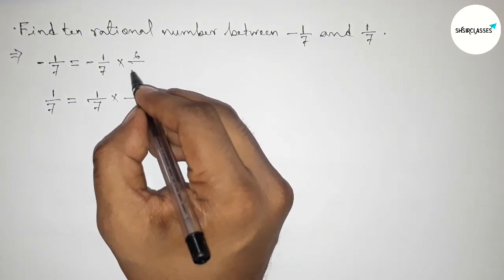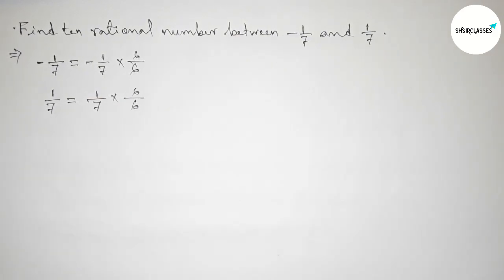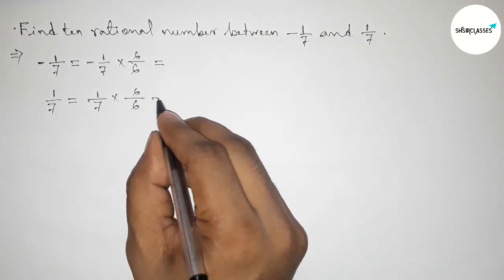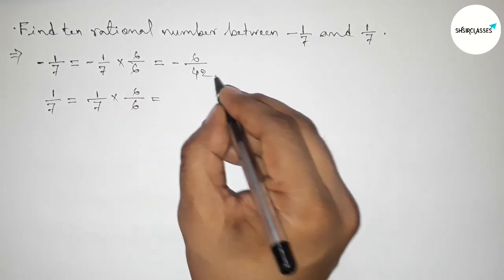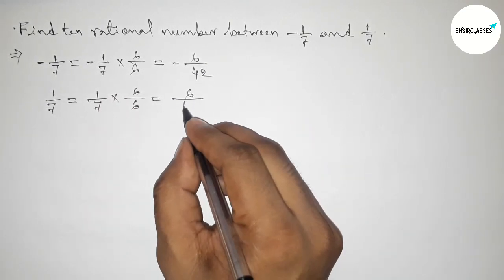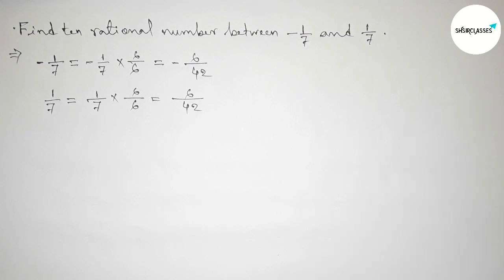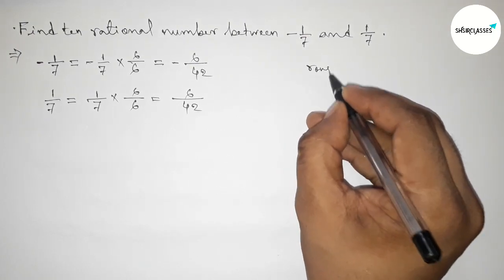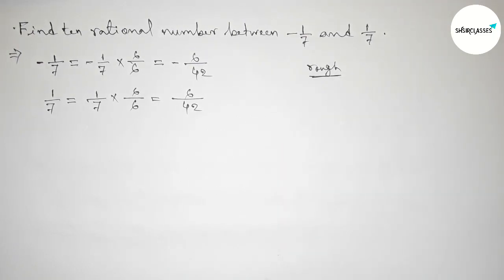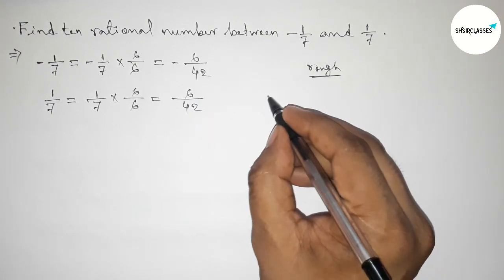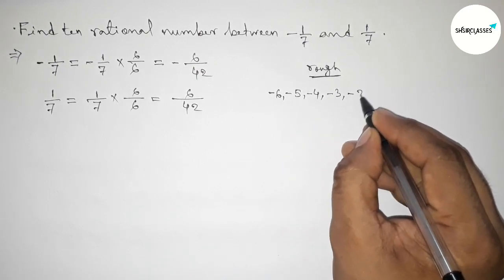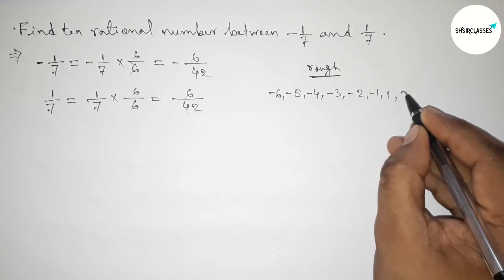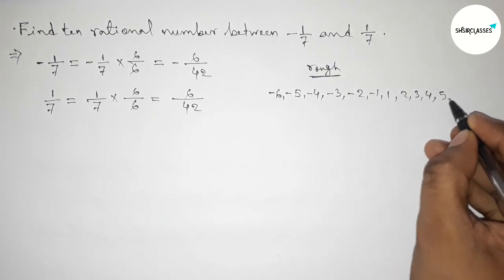Multiplying both numbers by 6, up and down. Now simplifying: here minus 6 by 42 and here 6 by 42. Next, both the denominators are same. Between minus 6 to 6 we can get 10 integers, and by these 10 integers we can form 10 rational numbers.